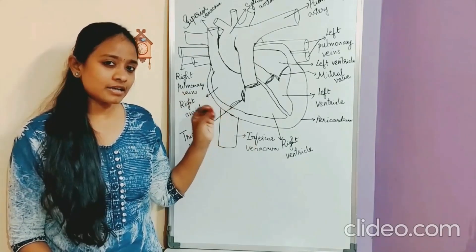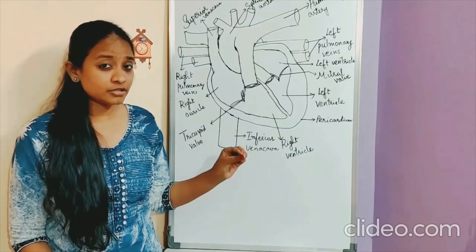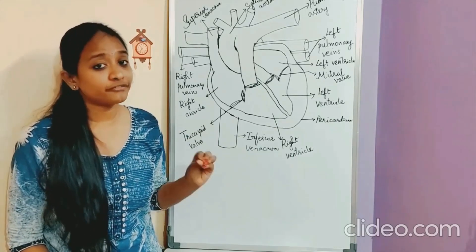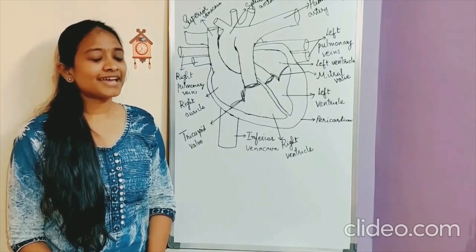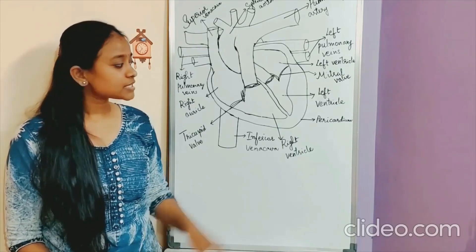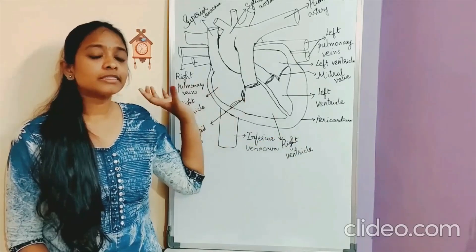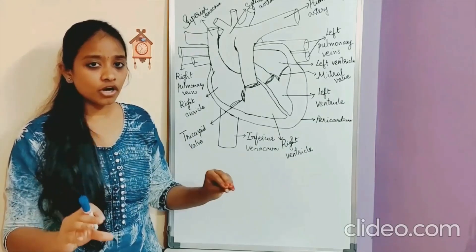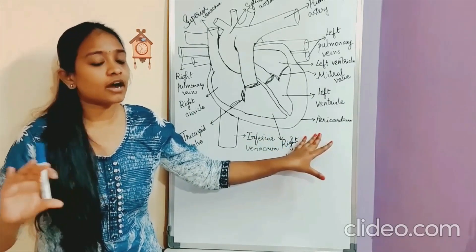When the heart has been given the task of pumping blood all over the body throughout your life, it should be strong enough. That is the reason the heart is made strong by having two walls. The two walls of the heart together are called the pericardium.